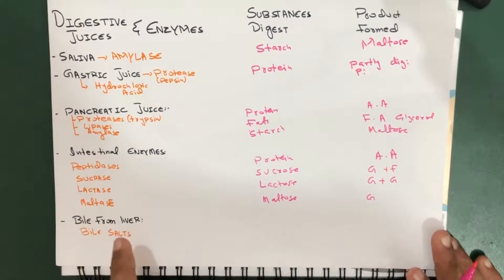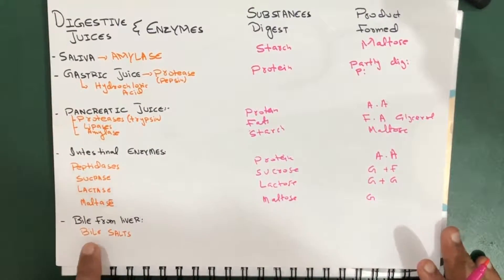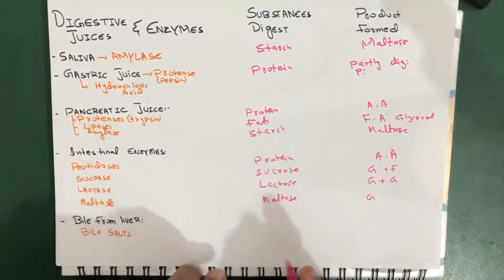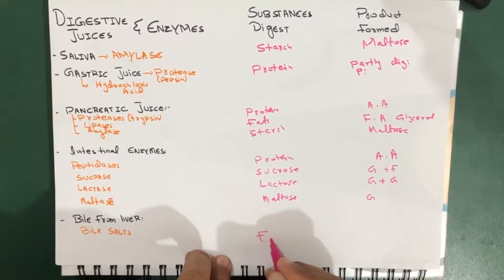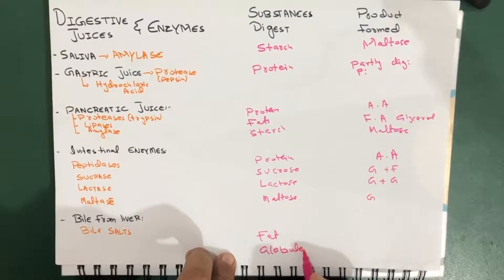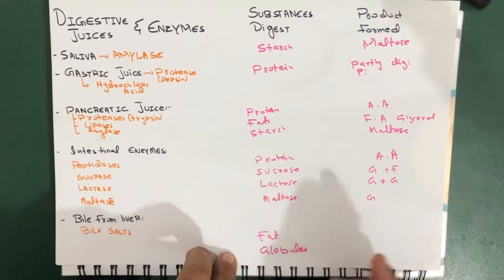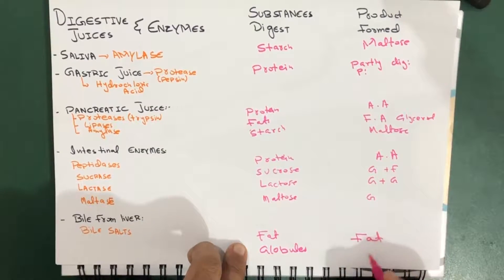Last but not least, we have bile, which comes from the liver. Bile provides bile salts which digest fat globules and convert them into fat droplets.